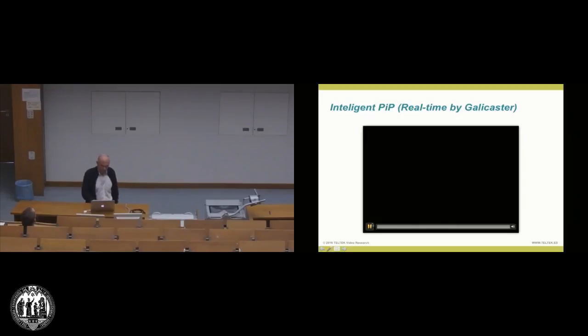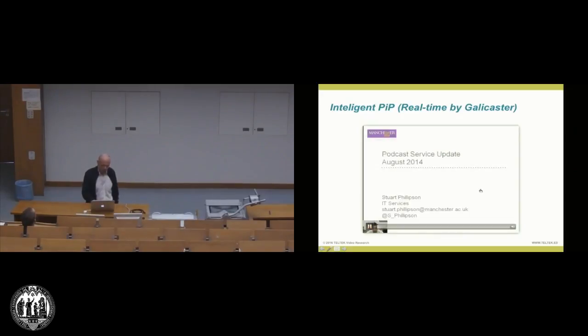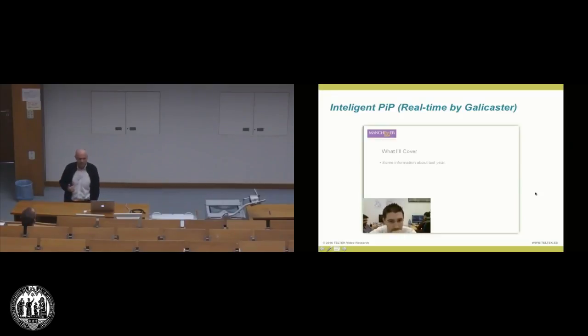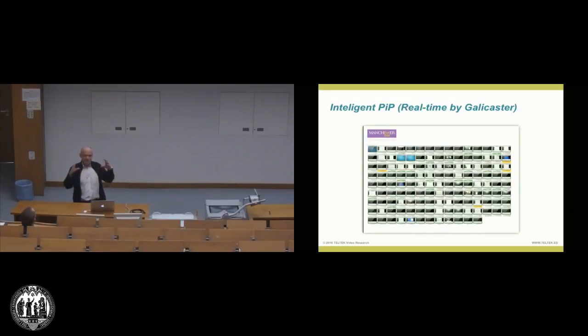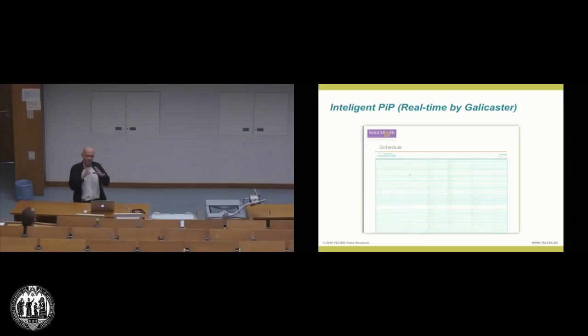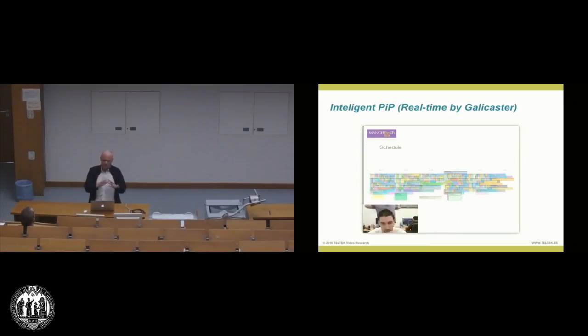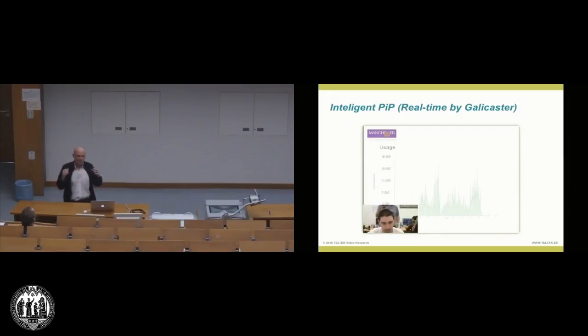Also, another functionality from the real time processing engine developed at the time for Manchester, applying a real computer vision algorithm, the system is detecting the empty space in the slides and is in real time adapting the picture in picture. So, for instance, here is no space. As soon as it detects the space, it scales up and down the picture in picture.